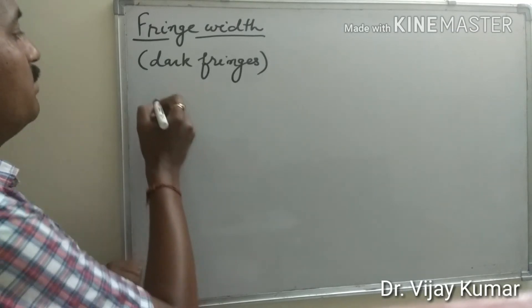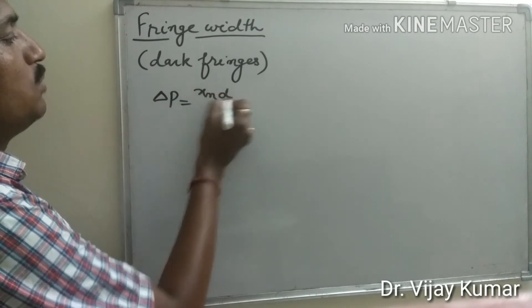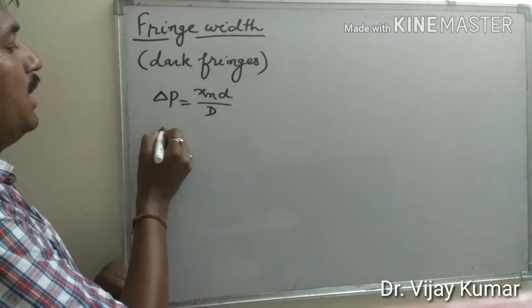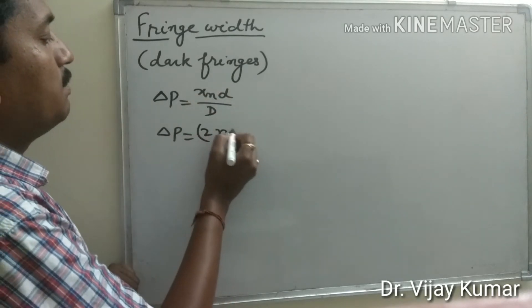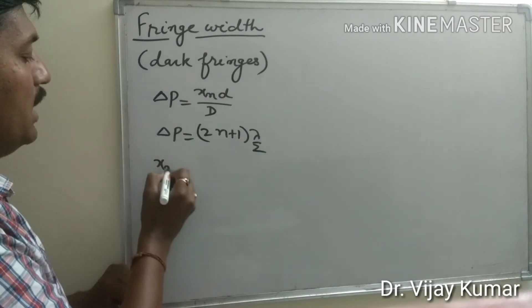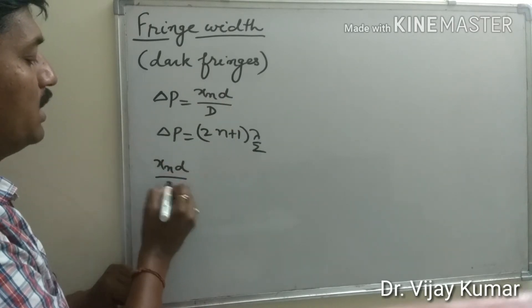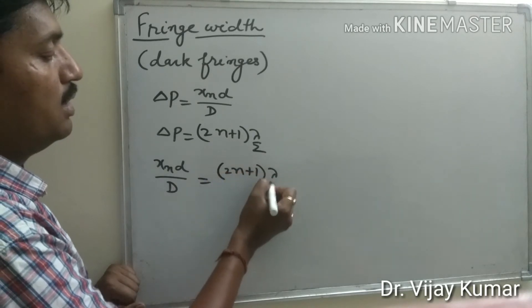In the previous video we derived path differences: xnd/D, and the path difference for dark fringes should be (2n+1)λ/2. Therefore, xnd/D = (2n+1)λ/2.